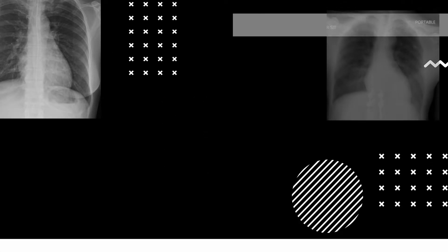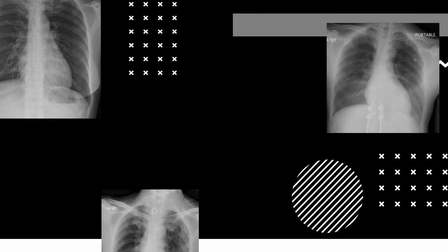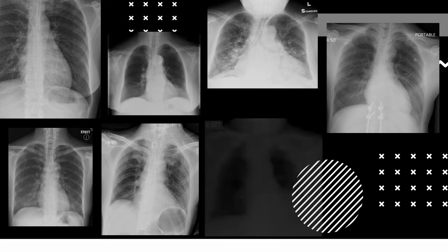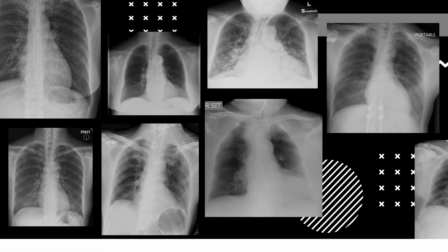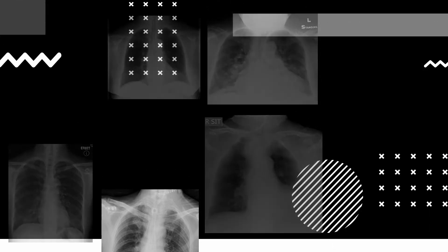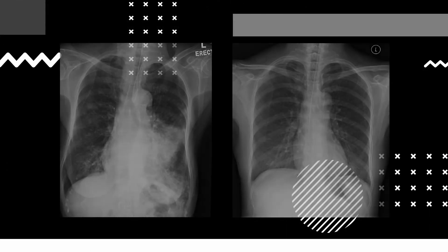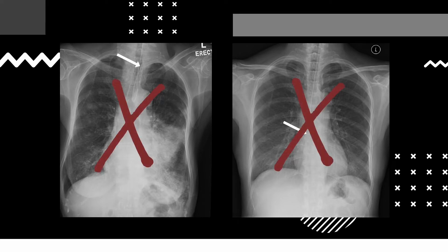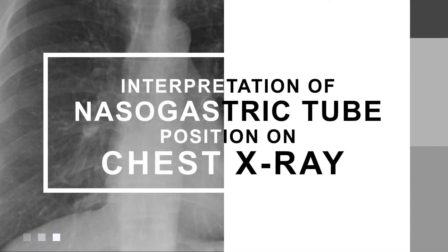Nasogastric tubes are widely used for gastric aspiration or decompression and for administration of medications or nutrition. However, inability to identify malpositioned tubes and the complications remains a major issue. Malpositioned tubes can be associated with the potential for harm, and prolonged hospital stay or inpatient death can occur as a result. This video will go through the process for confirmation of normal nasogastric tube position on chest x-ray.